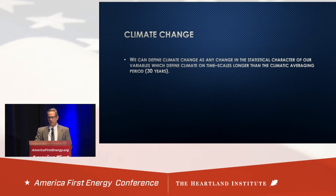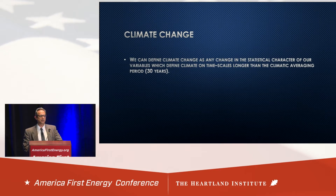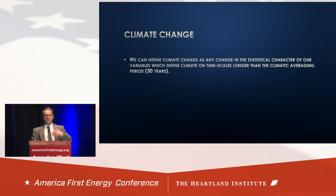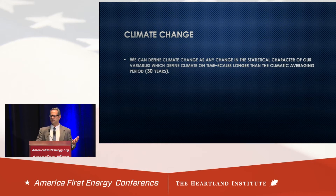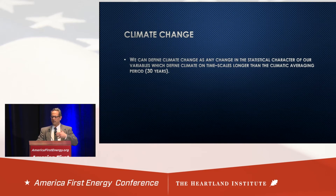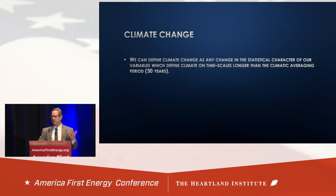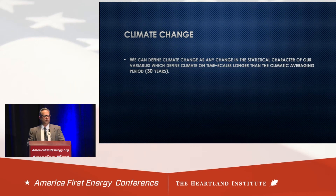Climate change is any change in the statistical character of climate — you don't need to see a change in average conditions. For example, in precipitation, maybe you get three inches of rain in a month, and in previous times you got that in six events but now you get that in two events. That's still a change in climate.